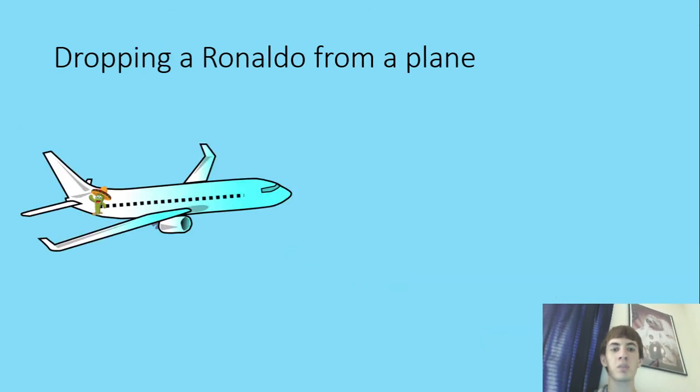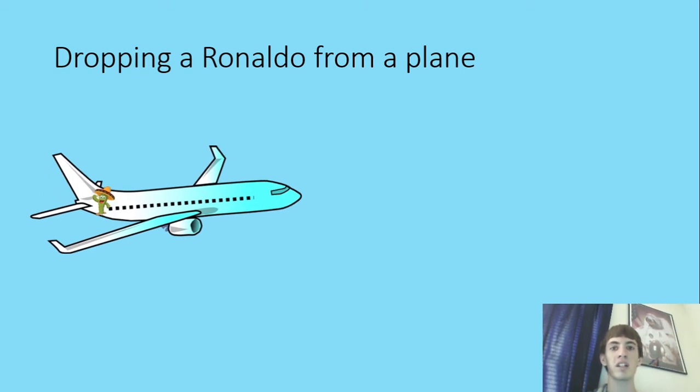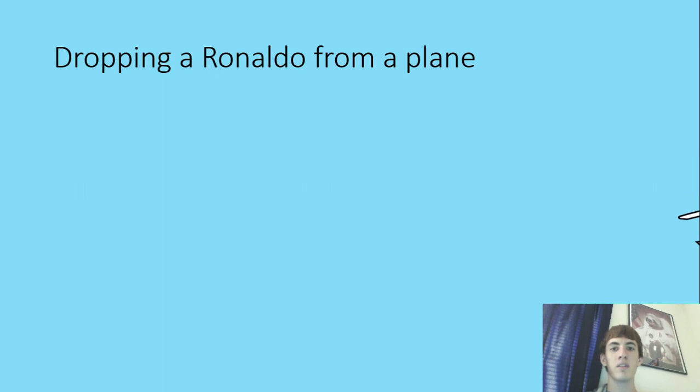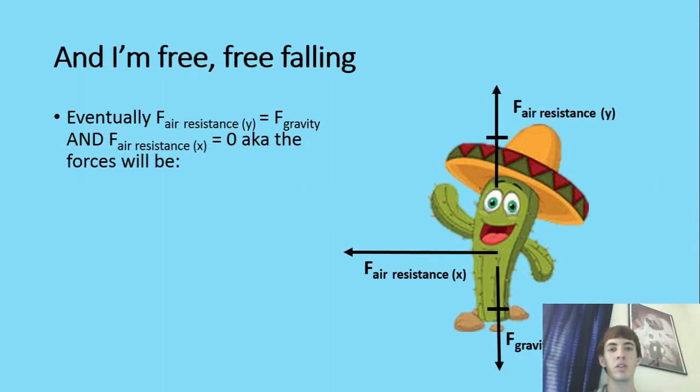So, on to our next example, will be an object free-falling. In this case, we'll be dropping a cactus from a plane for our practical real-world example, because that's something that students encounter on a daily basis, is a cactus being dropped from a plane. So, that's what it pretty much looks like. That's what you expect. So, moving on, we have this cactus, and he's falling.